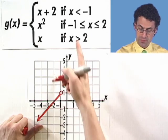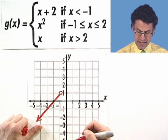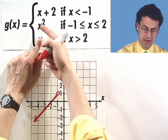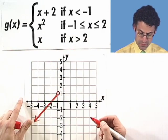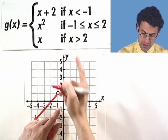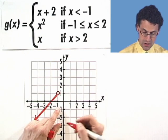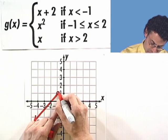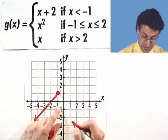Then what happens between negative 1 and 2? Well, between negative 1 and 2, I actually see I'm graphing x squared, which is a happy face parabola. So from negative 1, when I plug in negative 1 here into x squared, I see negative 1 squared, which is 1. So I actually now fill in that hole.